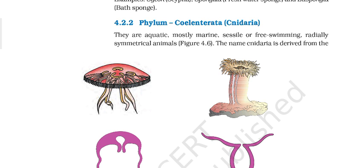These tentacles help to capture food and for defense. Certain ectodermal cells are modified into stinging cells, also called nematoblasts or nematocytes. These are stinging cells or stinging capsules, and they are known as nematoblasts or nematocytes.